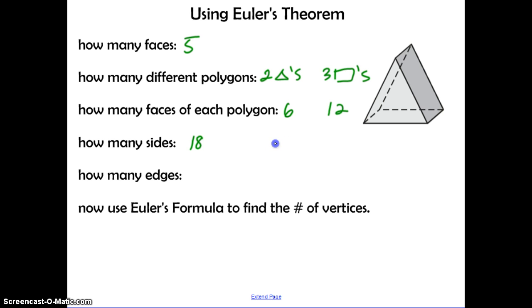Now, careful, because Euler's formula doesn't have a variable for sides. We actually need to use the sides to find the number of edges. So if you look carefully, this rectangular face right here, that side, and then this triangle, that side, those two intersect to create one edge. So if you think about it this way, two sides equals one edge. If we have the total number of sides as 18, then we can divide that by two to get nine edges.